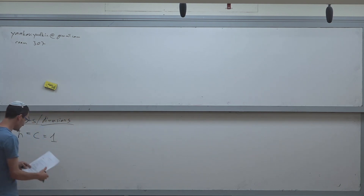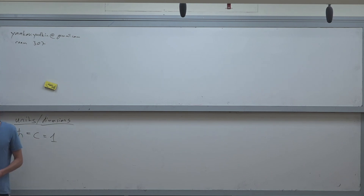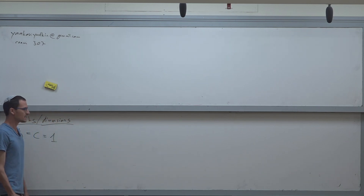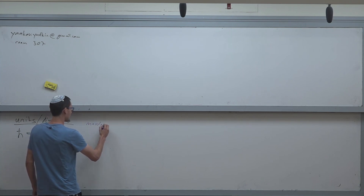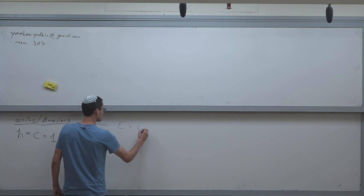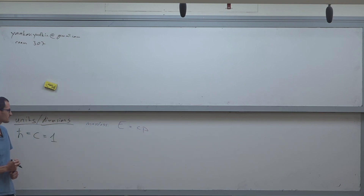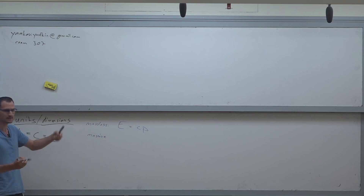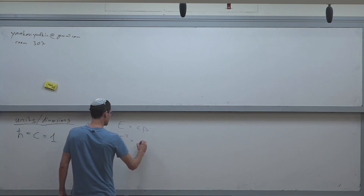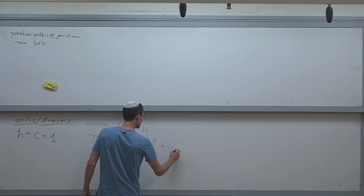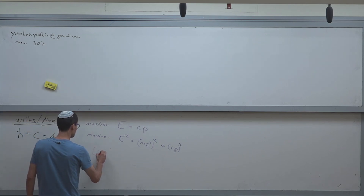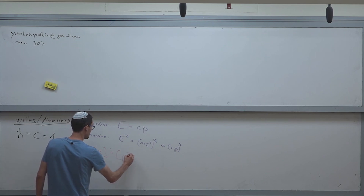The reason this is a neat choice is because it has a couple of very interesting consequences. If you think about a massless particle, you know that energy equals C times the momentum. For a massive particle — massive meaning it has a mass — energy squared equals rest mass squared plus momentum squared. If you plug in C equals 1, this now means that the units of energy equal the units of momentum equal the units of mass.